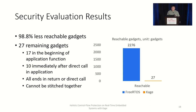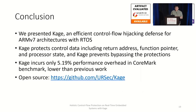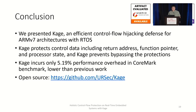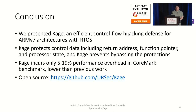To conclude, we presented Kage, an efficient control flow hijacking defense for ARMv7 architectures with real-time operating system support. Kage protects control data including return addresses, function pointers, and processor state, and prevents bypassing the protections. Kage incurs only a 5.19% performance overhead on the Coremark benchmark, significantly lower than previous work. Finally, Kage is open sourced. Thank you.